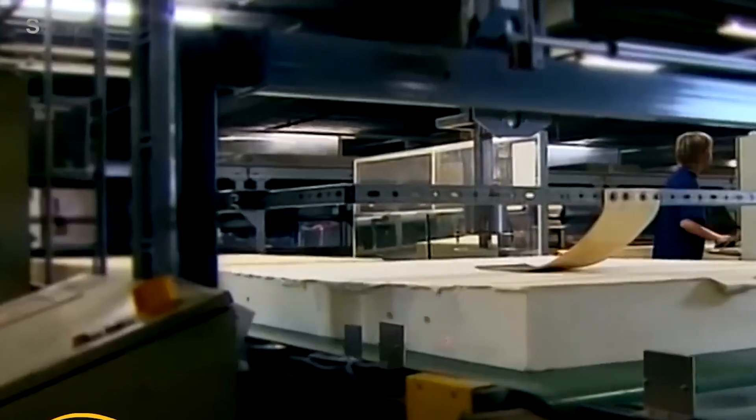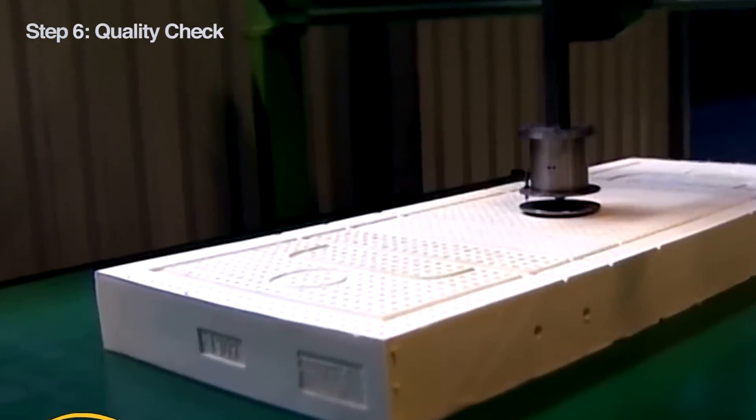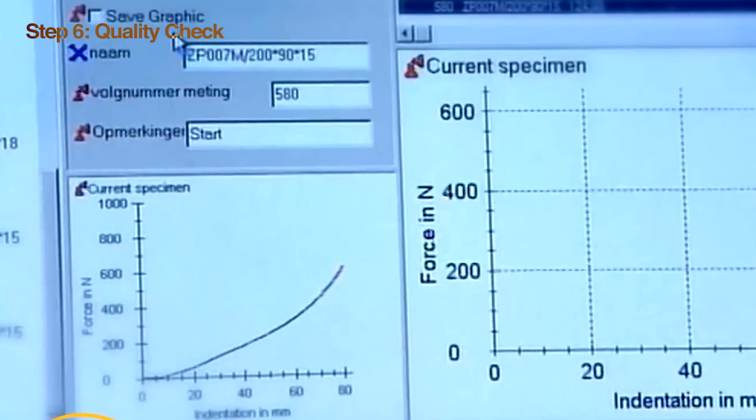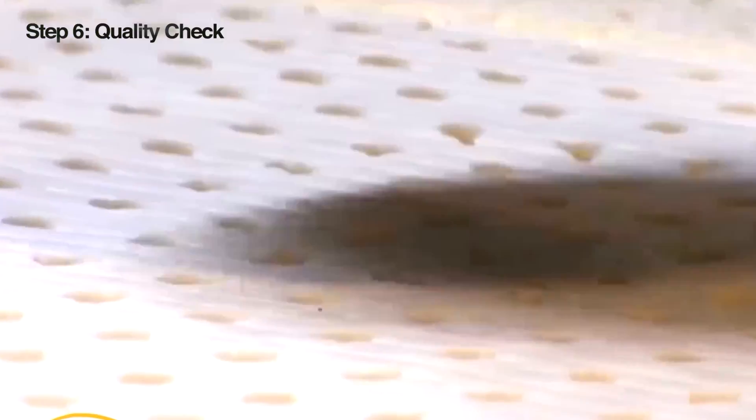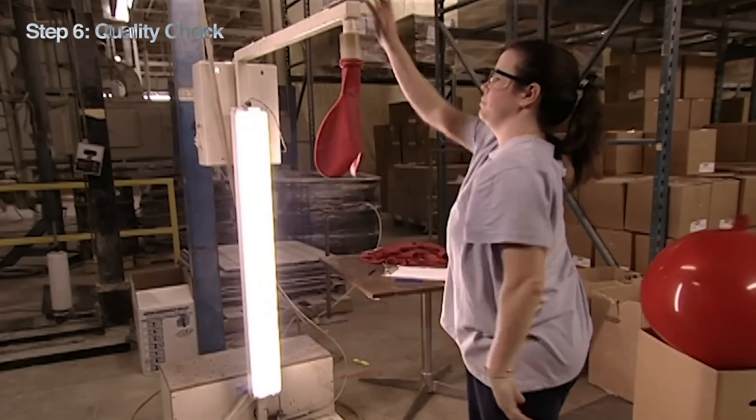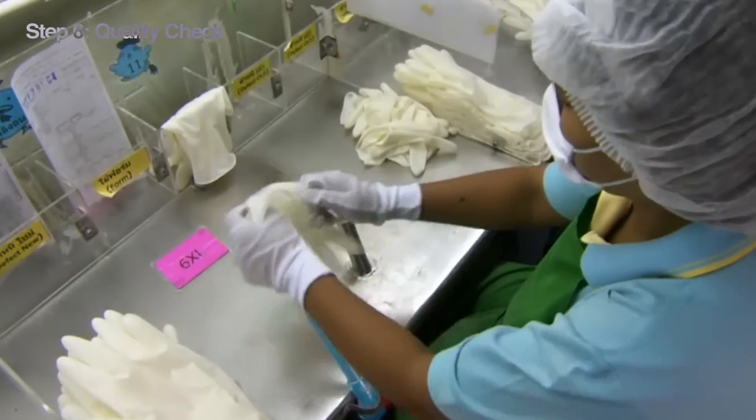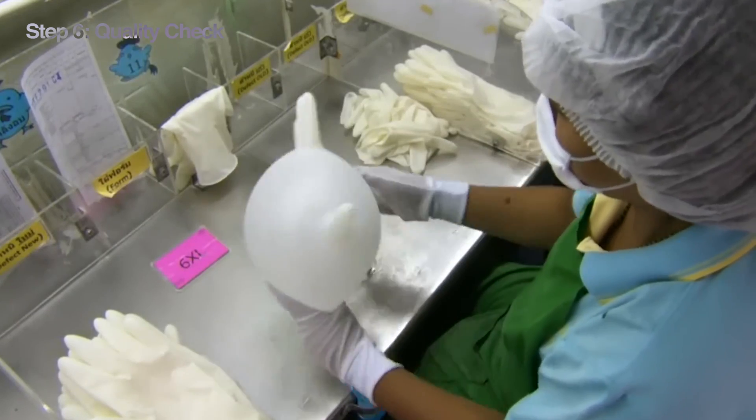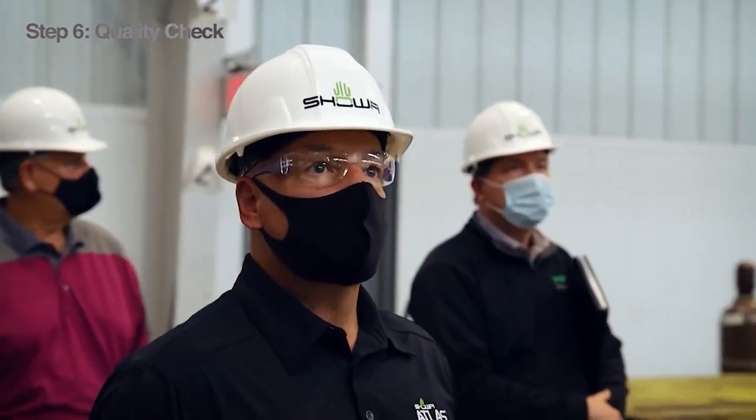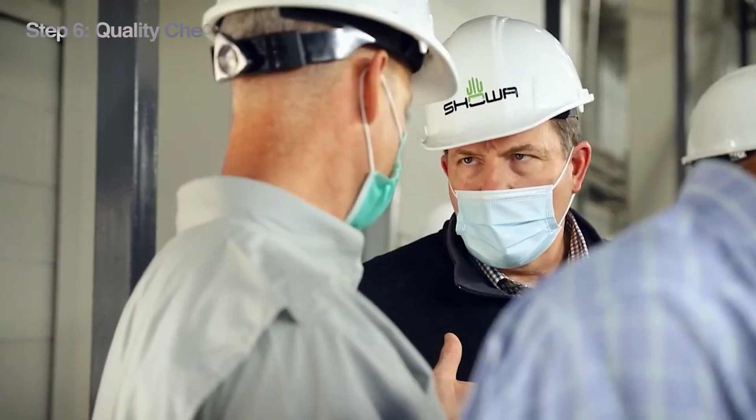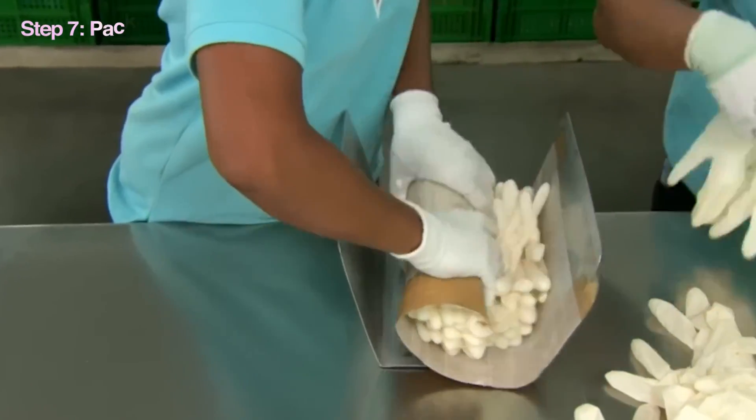Before the final products hit the shelves, there's one last barrier they have to pass: rigorous quality checks to ensure they meet industry standards. This includes testing for strength, flexibility, and resistance to wear and tear. The latex products need to be perfect and perform at their best, or else there might be some major consequences.